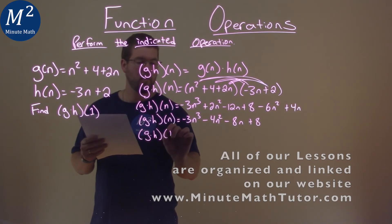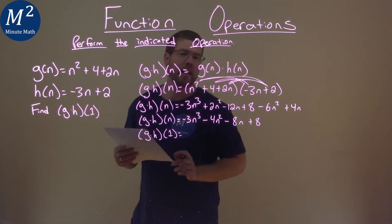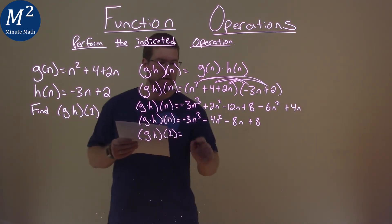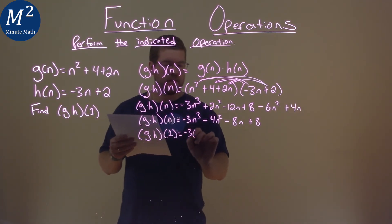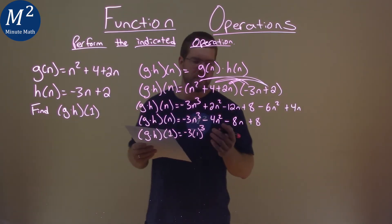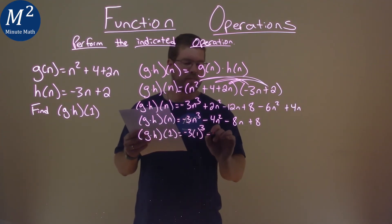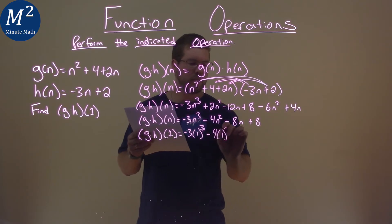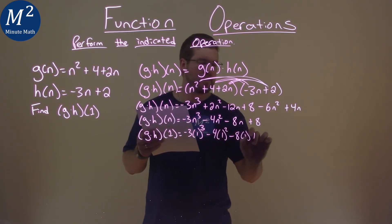So g times h of 1, this step here, we're plugging 1 in for n. So in doing that negative 3 times 1 to the third power minus 4 times 1 squared minus 8 times 1 plus 8.